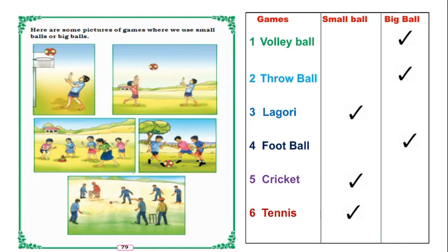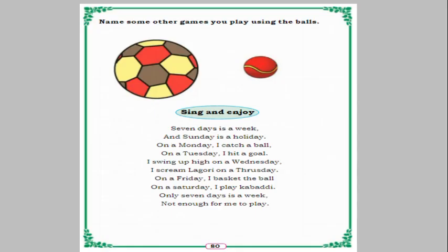In the next activity, there are pictures of games where small balls or big balls are used. We have to observe and say which game uses a small ball and which uses a big ball. In Volleyball we use a big ball; in Throwball also a big ball; in Luguri a small ball; in Football a big ball; in Cricket a small ball; in Tennis also a small ball.